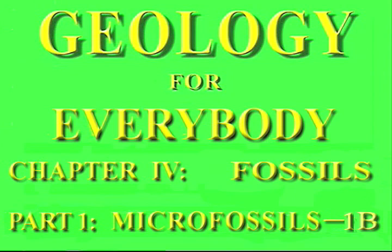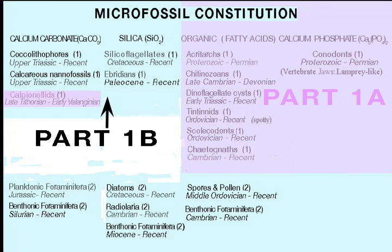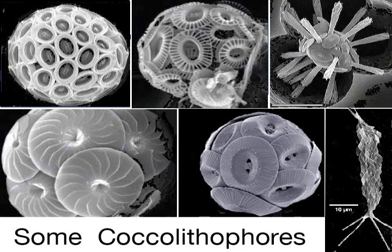Welcome to Part B of this first of two slideshows about microfossils. In this episode, we sketch the characteristics of the four groups above the arrow on this slide. Those previously discussed in Part 1A have a purple cast. The two groups under the calcium carbonate heading are both nanofossils — that is, their maximum dimension is less than 50 microns.